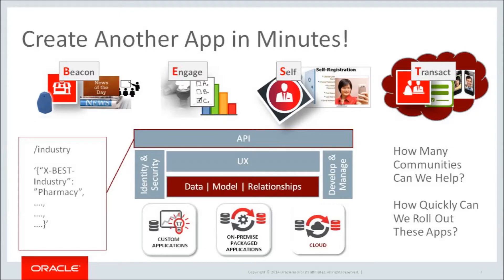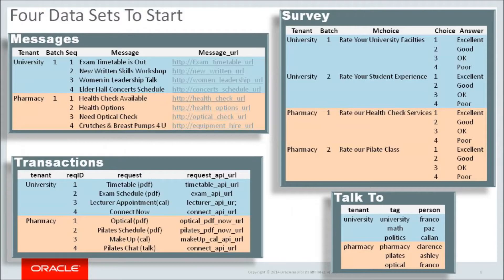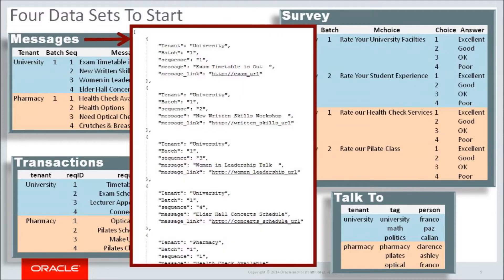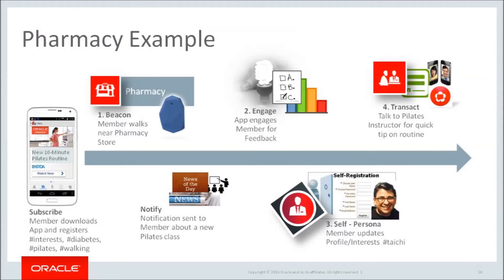We've seen the university example and now let's take a look at how we can create another app in just minutes. We can simply start with four basic data sets, like the messages we want them to see, the surveys we want them to take, the transactions they may need, including the people they may need to talk to. And these can be stored as JSON objects in the database, making a pharmacy mobile app very easily and quickly.